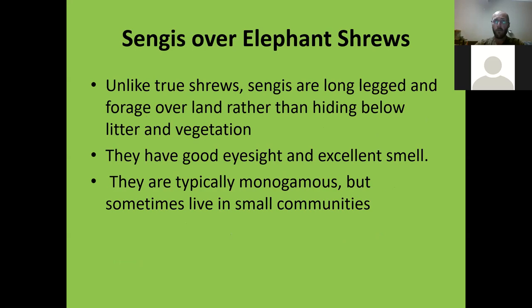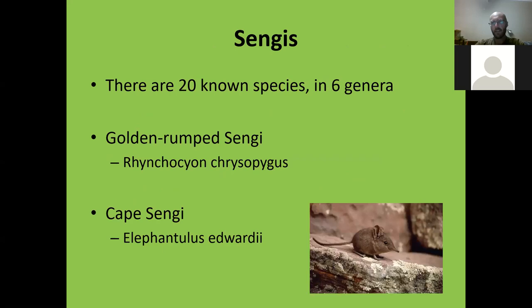Unlike true shrews, sengis are long-legged and forage over land rather than hiding below leaf litter. The larger sengis are quite comfortable coming out in the open. They have rather good eyesight and an exceptional sense of smell, slightly lower metabolisms — true shrews can starve to death in hours, while sengis can go a few days. They're typically monogamous but some live in small communities of monogamous pairs. There are 20 known species, including the golden-rumped sengi, the Cape sengi, and the four-toed sengi found in central Africa.